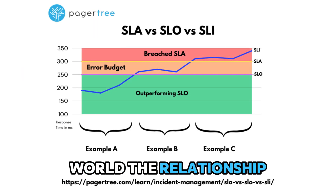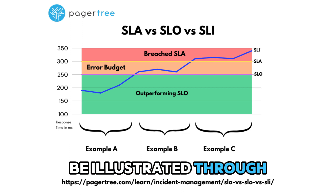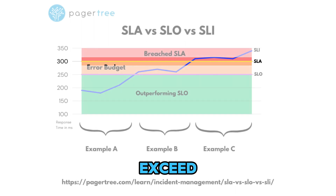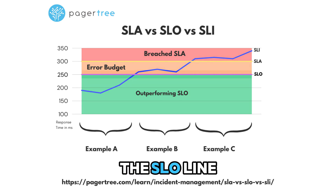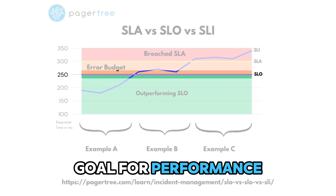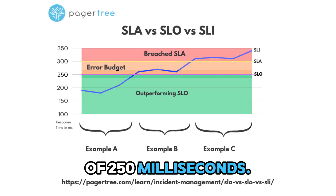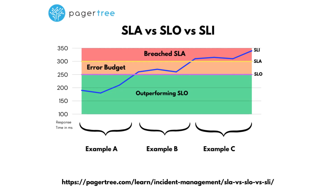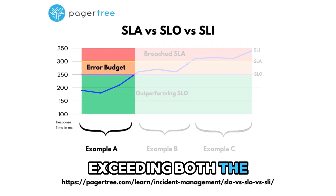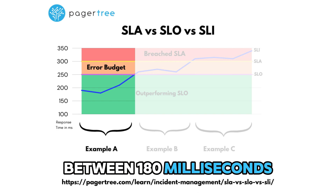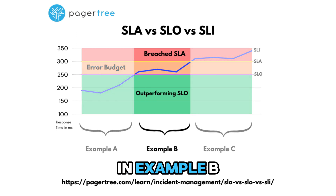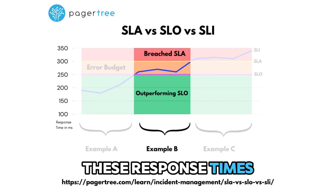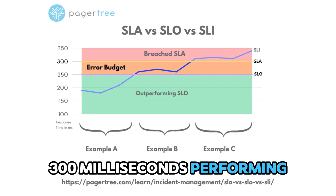In the real world, the relationship between SLAs, SLOs, and SLIs can be illustrated through a simple graph. The SLA line in yellow indicates a promise made to the customer that response times will meet or exceed 300 milliseconds. The SLO line in purple indicates the internal goal set by the project manager to meet or exceed 250 milliseconds. The SLI line in blue shows the actual measured performance of the service. In example A, the performance is exceeding both the SLA and SLO, with response times between 180 and 250 milliseconds. In example B, the performance is exceeding the SLA promise but missing the SLO goal, with response times ranging from 250 to 300 milliseconds — performing inside of the error budget.